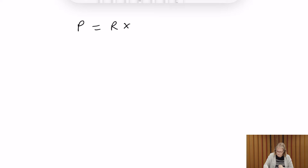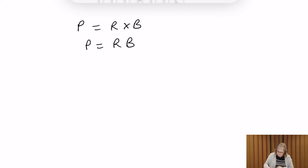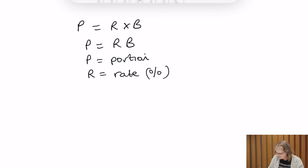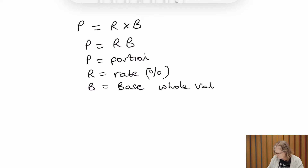The formula method can be written like this: P = RB, where R and B are being multiplied. P represents the portion, or the part of something. R represents the rate — that's always the percentage we're looking at. And B is the base, which is the whole value of something at 100%, at one whole.